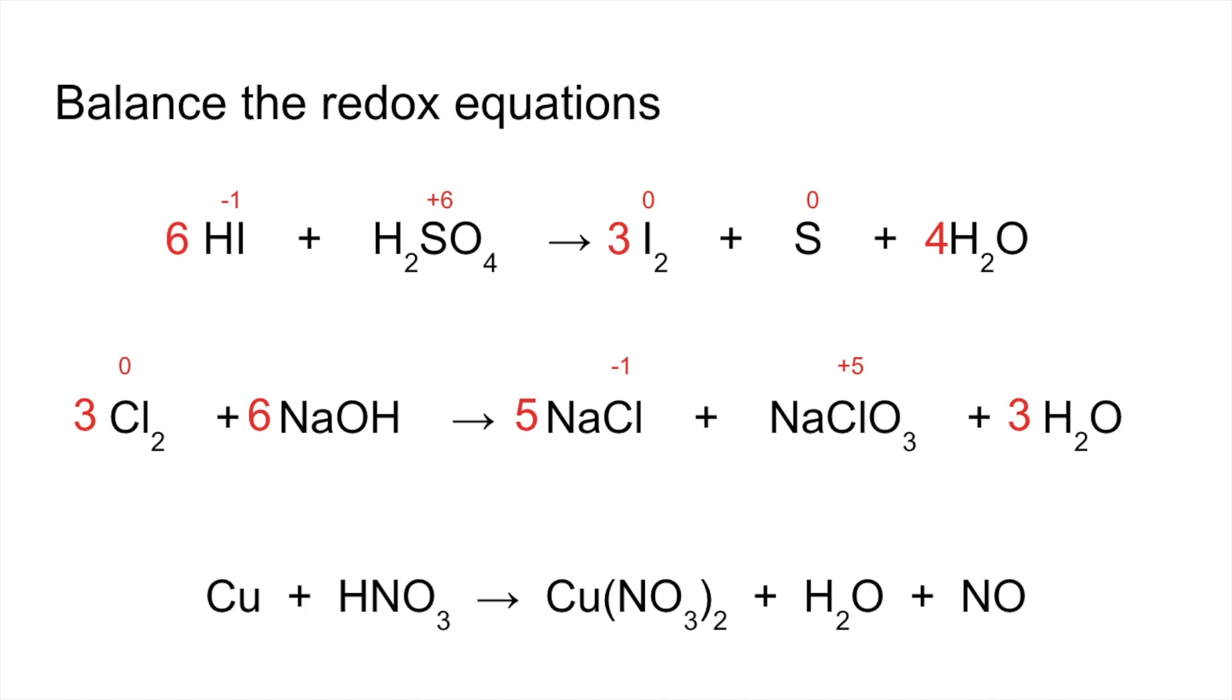The final one now. We'll run through the oxidation changes for the copper and the nitrogen. It's 0 plus 5. Copper goes to plus 2. Some of the nitrogen stayed plus 5. Some changed to plus 2.